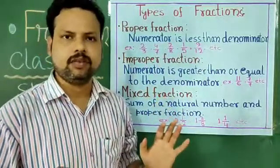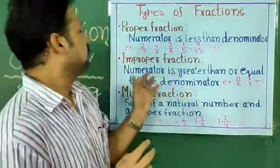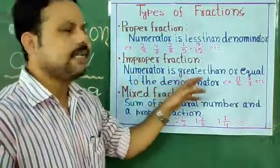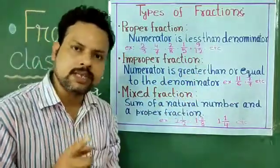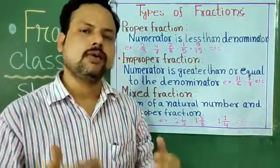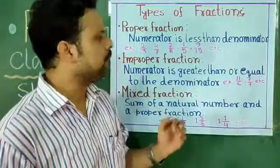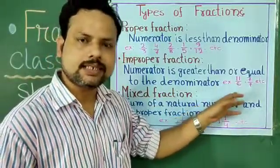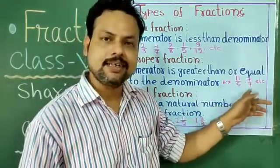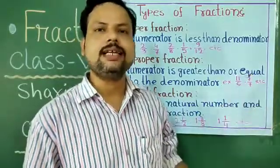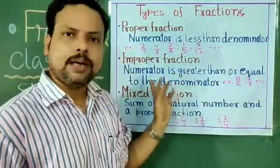Next one — improper fraction. In case of improper fraction, the numerator is greater than or equal to the denominator. Then this type of fraction is known as improper fraction. Example: 11 by 6 — numerator is greater than denominator. And here, 7 by 7 — numerator and denominator both are same — so it is also under improper fraction.